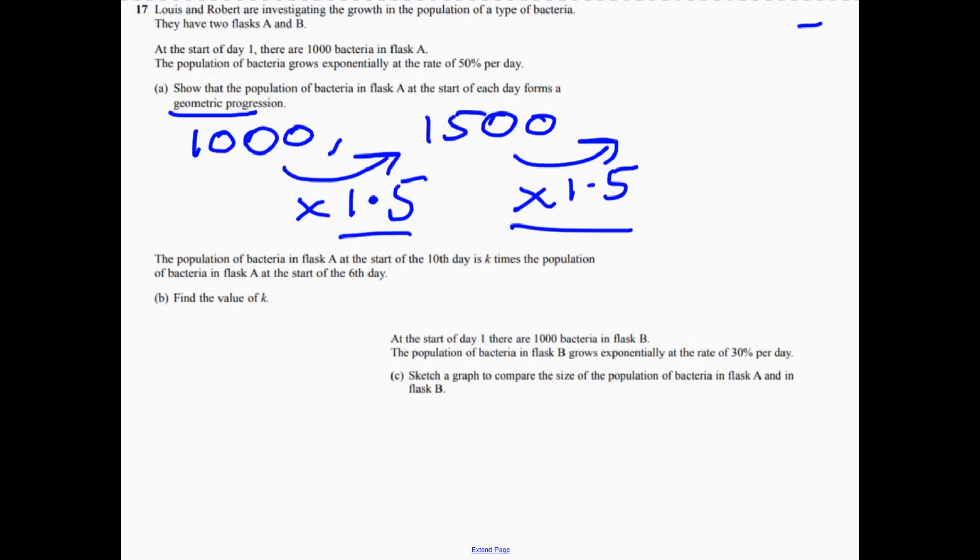So now let's have a look at part B. We've got the sixth day. Let's think about how to work out what the population would be on the sixth day. Well, it would be 1,000 and then we would multiply by 1.5 to the power of 5, not 6. It'd be 5. So if you think the first day is just 1,000, the second day it was 1,000 times 1.5 and so on.